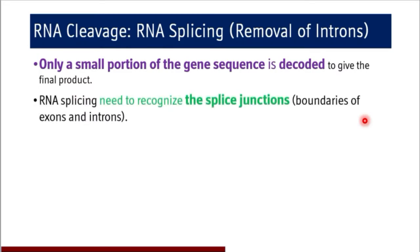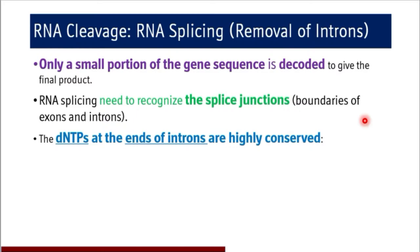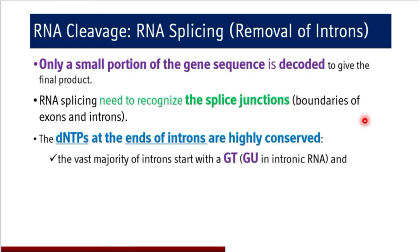RNA splicing needs to recognize the splice junctions first, because the mechanism needs to identify where it needs to be cleaved and where it needs to be joined again — those are nothing but the boundaries of exons and introns. The nucleotides at the end of introns are highly conserved; these are sequences or splice junctions which have not been changed during evolution. The vast majority of introns start with GT sequence, and in intronic RNA that is GU, and this intronic sequence ends with an AG. So the GT to AG rule is followed here, and this GT to AG rule is highly conserved during complete evolution.